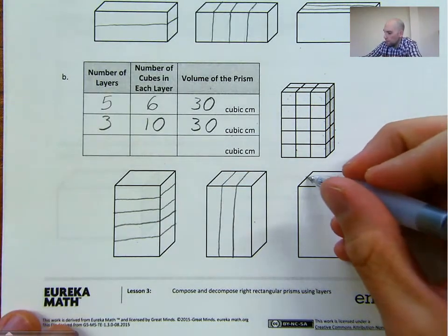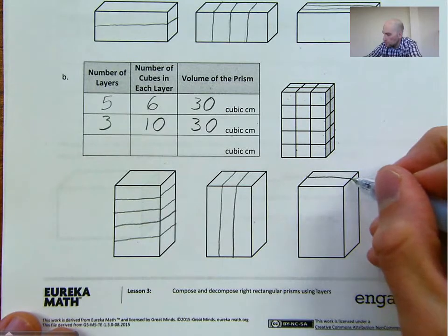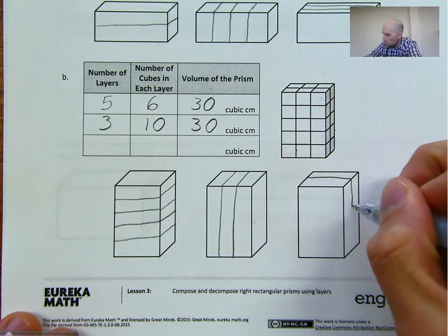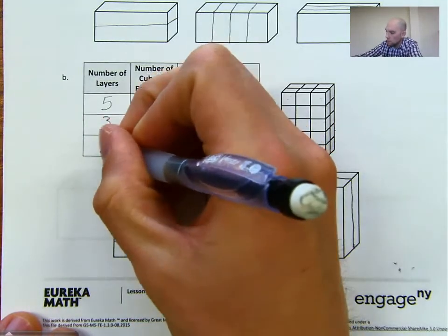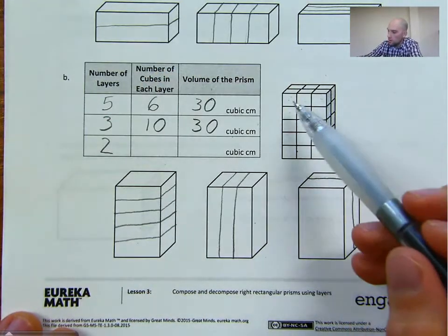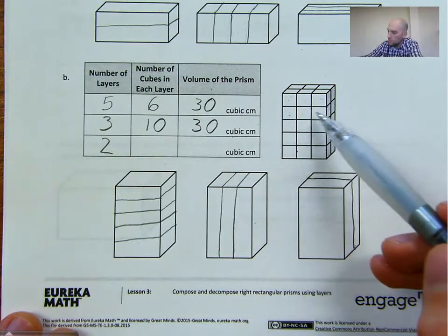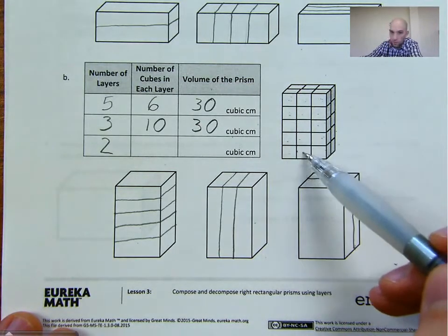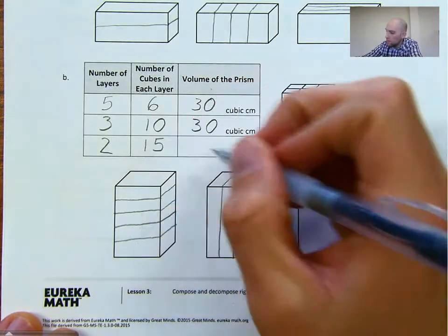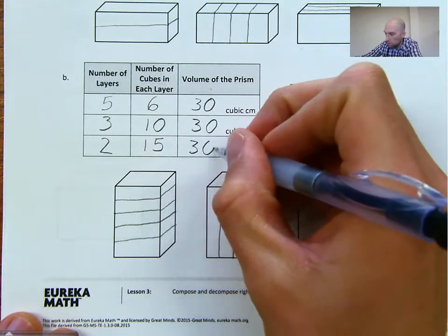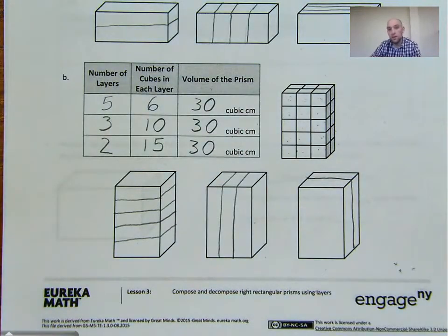And finally, we can split it this way as well into 2 layers. Each layer has 15 cubes. 2 times 15 will still give us 30 cubic centimeters. Again, the number of cubes and the number of layers will change, but the volume for our prism will stay the same because it's the same prism.